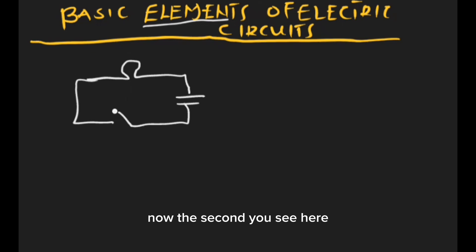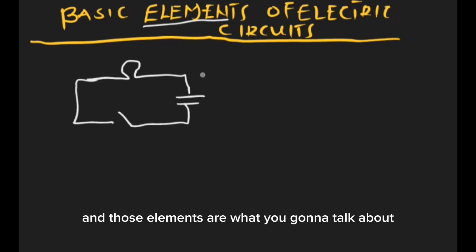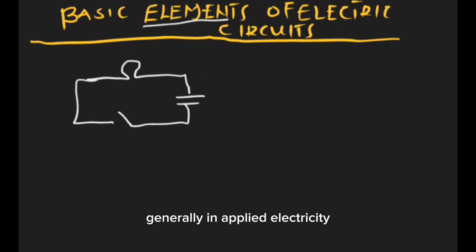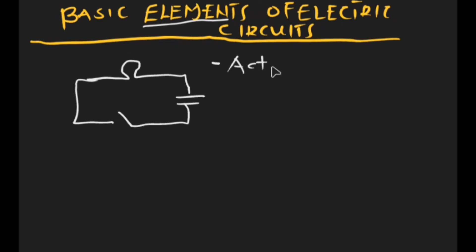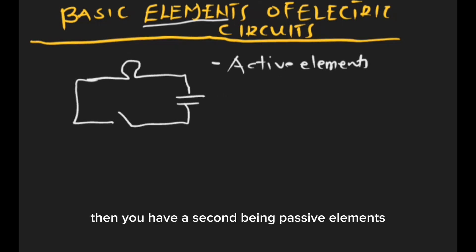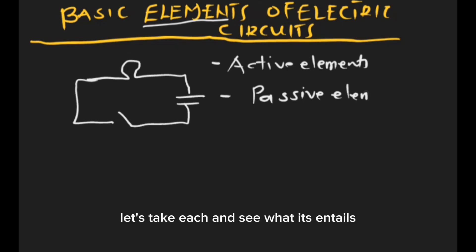The circuit comprises different elements which have come together to form the circuit, and those elements are what we're going to talk about. Generally in applied electricity, elements are grouped into two: we have the first being active elements, and the second being passive elements.